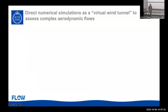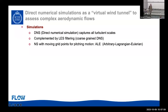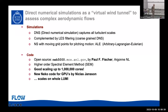We're going to use direct numerical simulations as a virtual wind tunnel to assess complex aerodynamic flows. The simulations — DNS — capture all the turbulent scales. They are complemented by what we call coarse-grained DNS or LES by filtering the highest wavenumbers in our spectral element codes. These are not real LES because they don't have sub-grid scale modeling — they just filter the highest wavenumbers. For moving pitching motion, we use the arbitrary Lagrangian-Eulerian method.